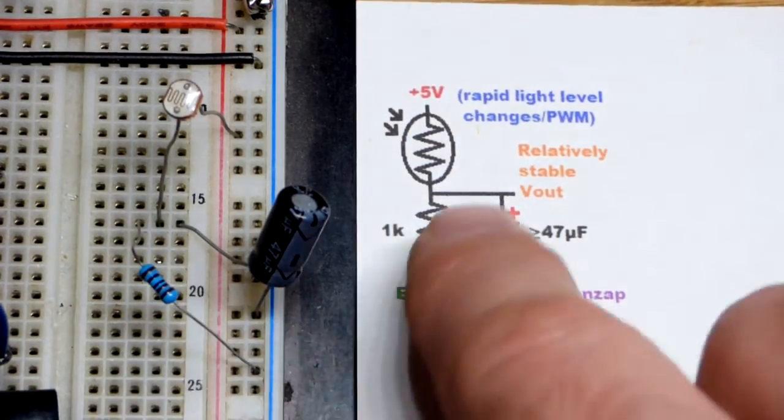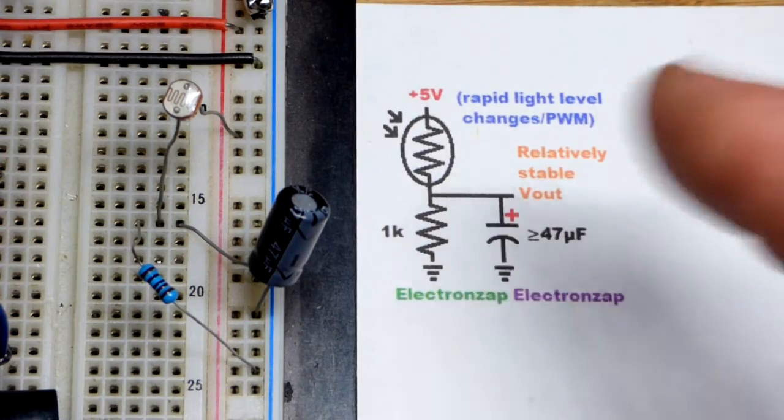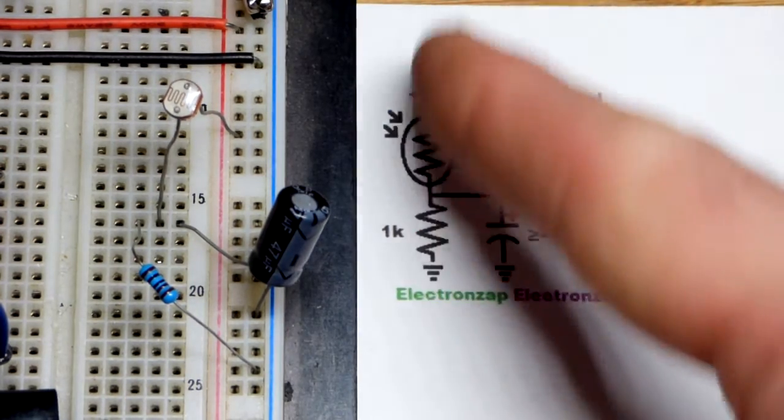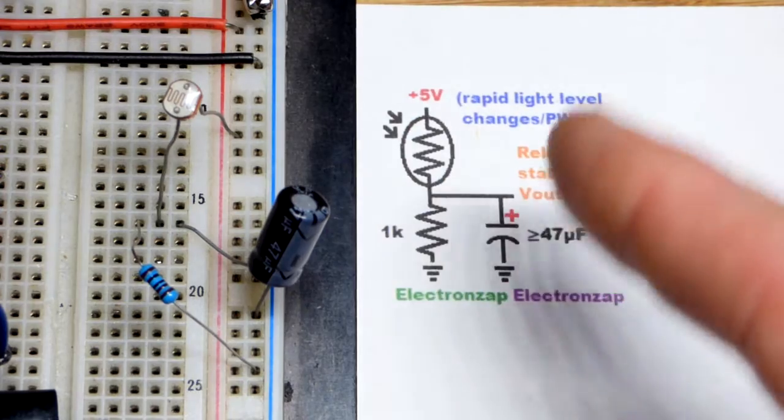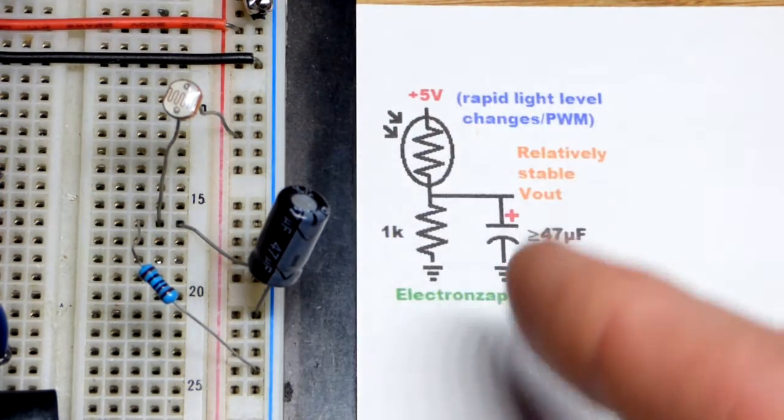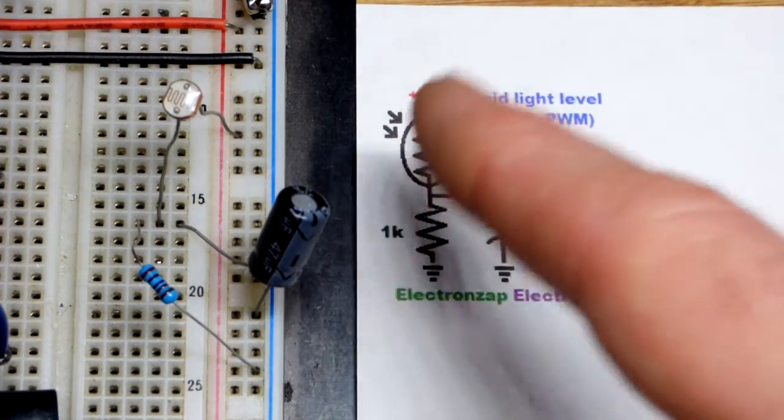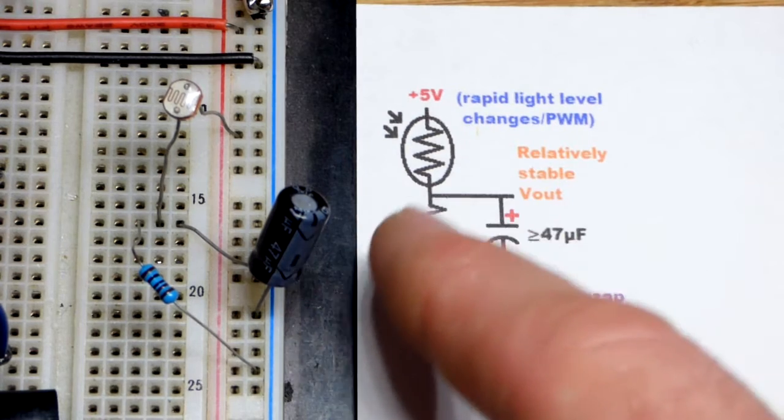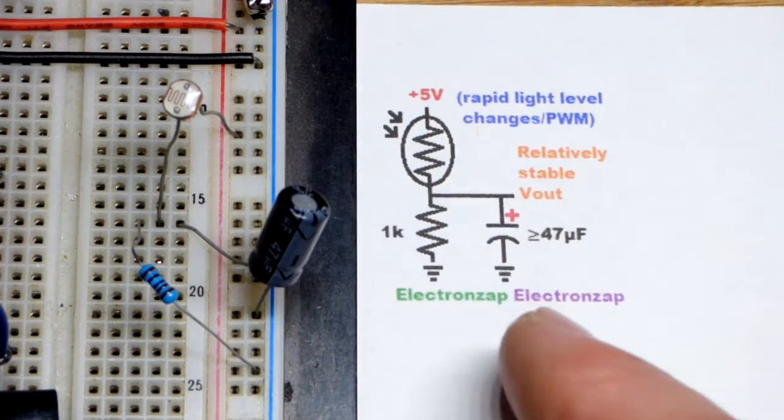Also the higher value resistor you got on the low side will smooth things out better. That's because bright light falling on the light dependent resistor will cause the capacitor to charge pretty quickly. And then when it gets darker, the current is going to flow out of the capacitor into the resistor.